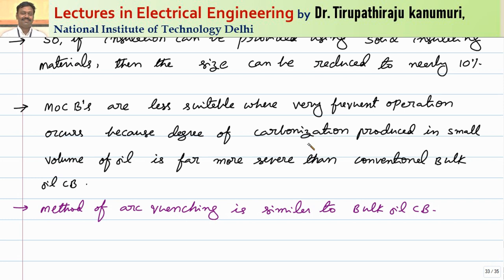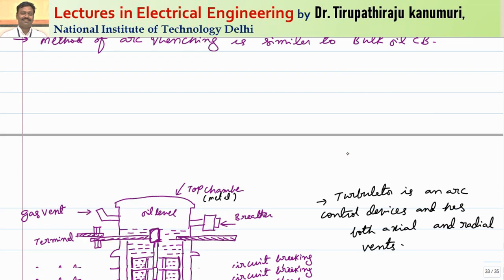The oil gets spoiled at a very fast rate due to carbonization, so frequent maintenance of the oil is required. This breaker cannot be used where frequent operation is required — practically, after every five or six operations you have to check the oil for its dielectric property. Wherever frequent operation is not required, we can go for minimum oil circuit breakers easily. The method of arc quenching is similar to that of the bulk oil circuit breaker.